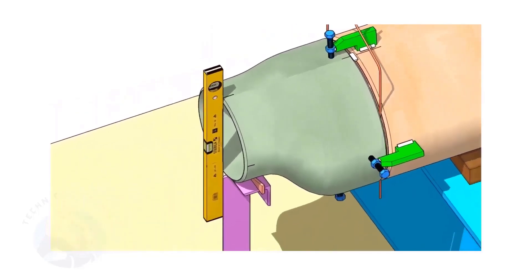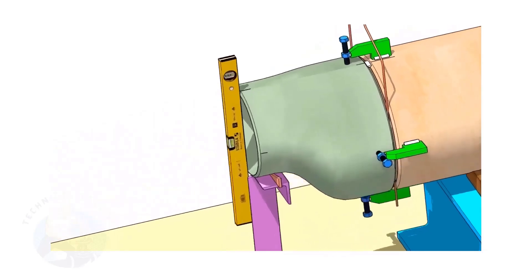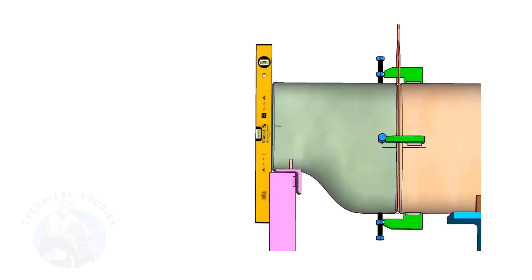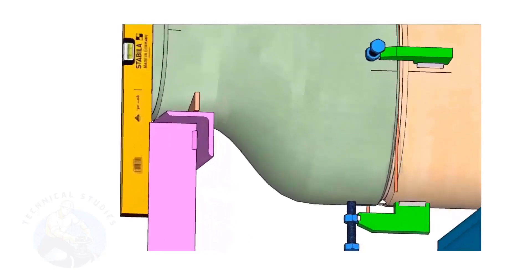Correct the levelness of the outer face of the reducer. Tack weld in the bottom side of the joint.